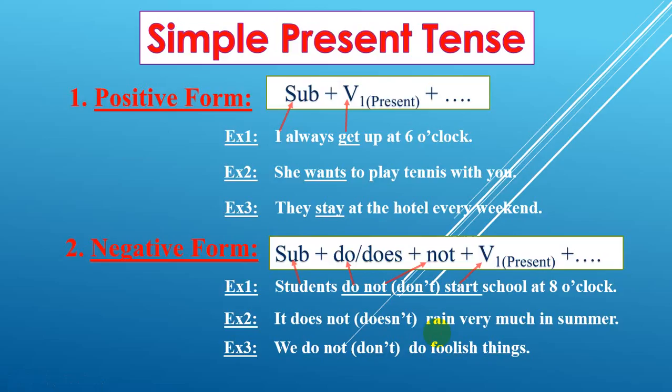Example number three: we do not — or don't. Subject is 'we', and 'do' — it depends on the subject, and 'we' is plural so we use 'do'. 'Not' is to show the negative, and 'do' here is the auxiliary verb. That's all for the negative form examples.